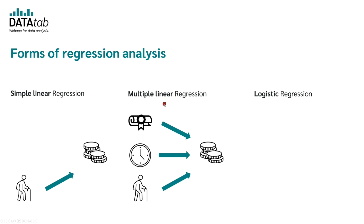In multiple linear regression, several independent variables are used to predict the dependent variable. So you would use the highest educational level, weekly working hours, and age of a person to predict salary. The difference between simple and multiple regression is that in one case only one independent variable is used, and in the other case several are used. Both types have in common that the dependent variable is metric — for example, salary, body size, shoe size, or electricity consumption.